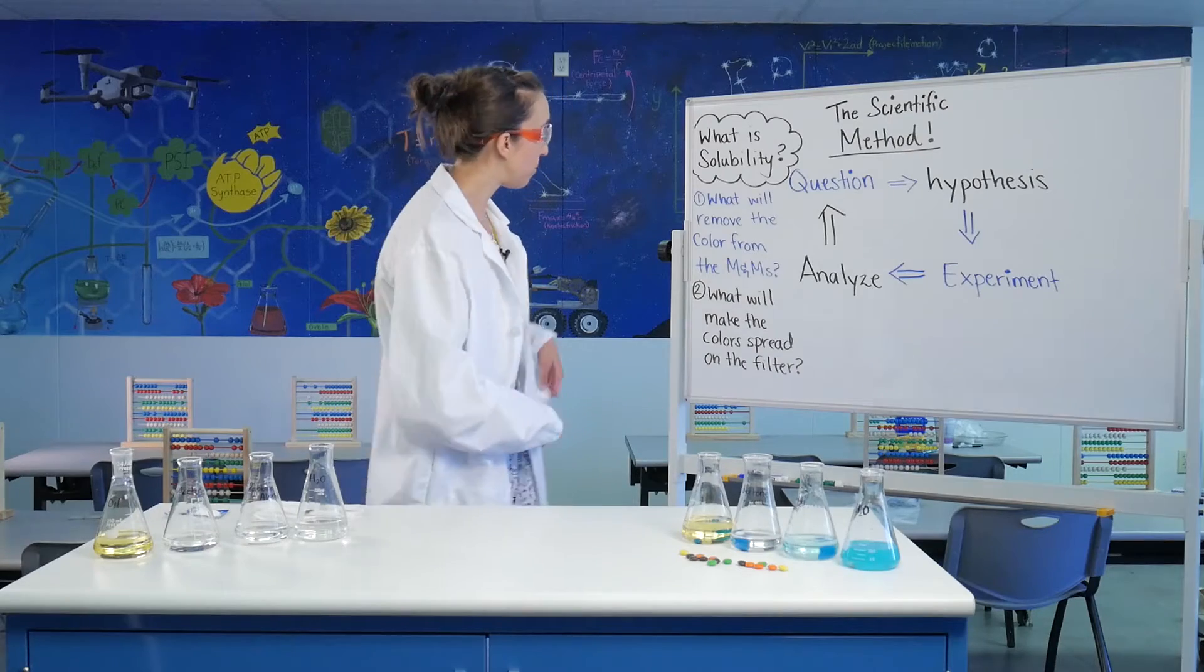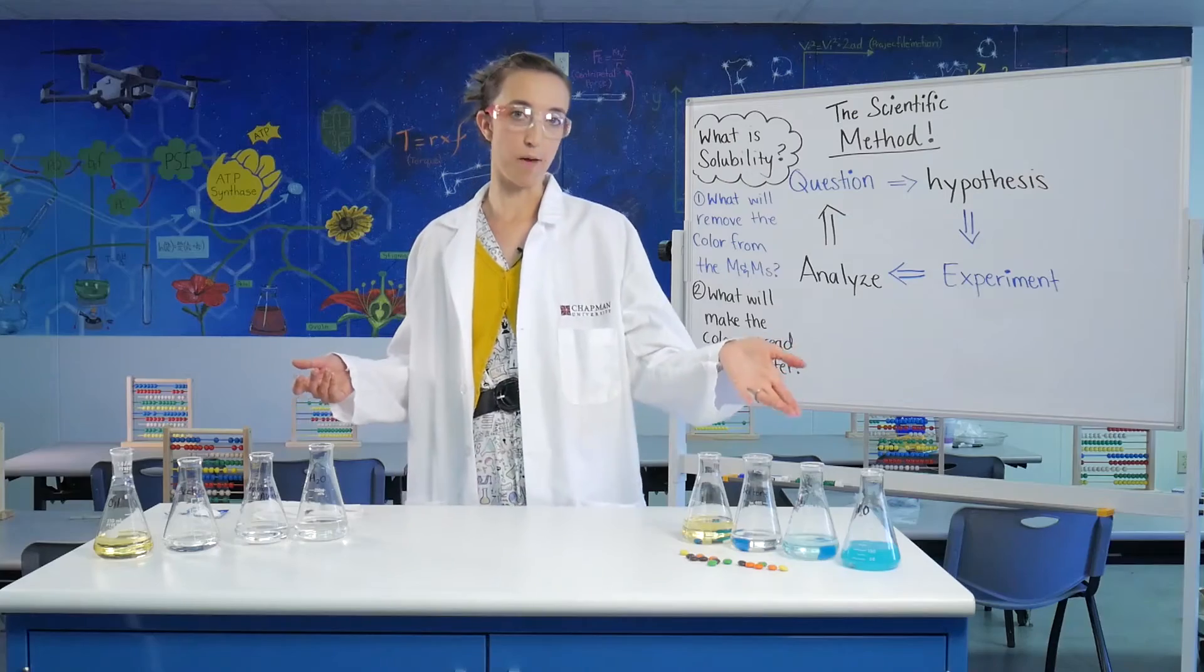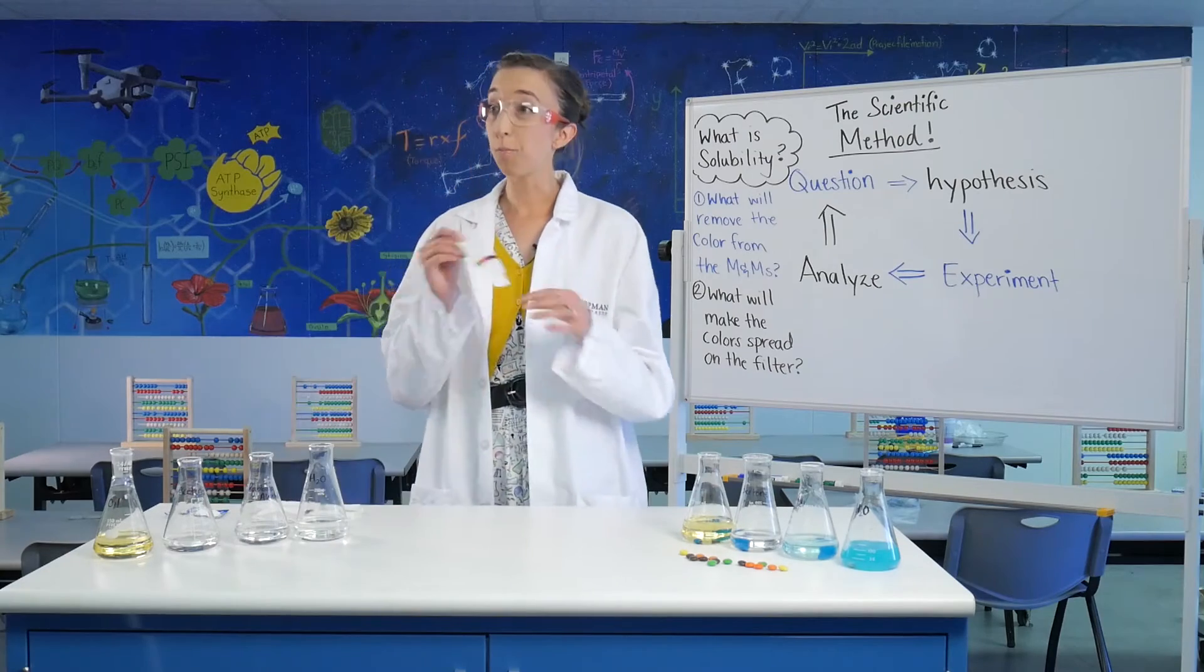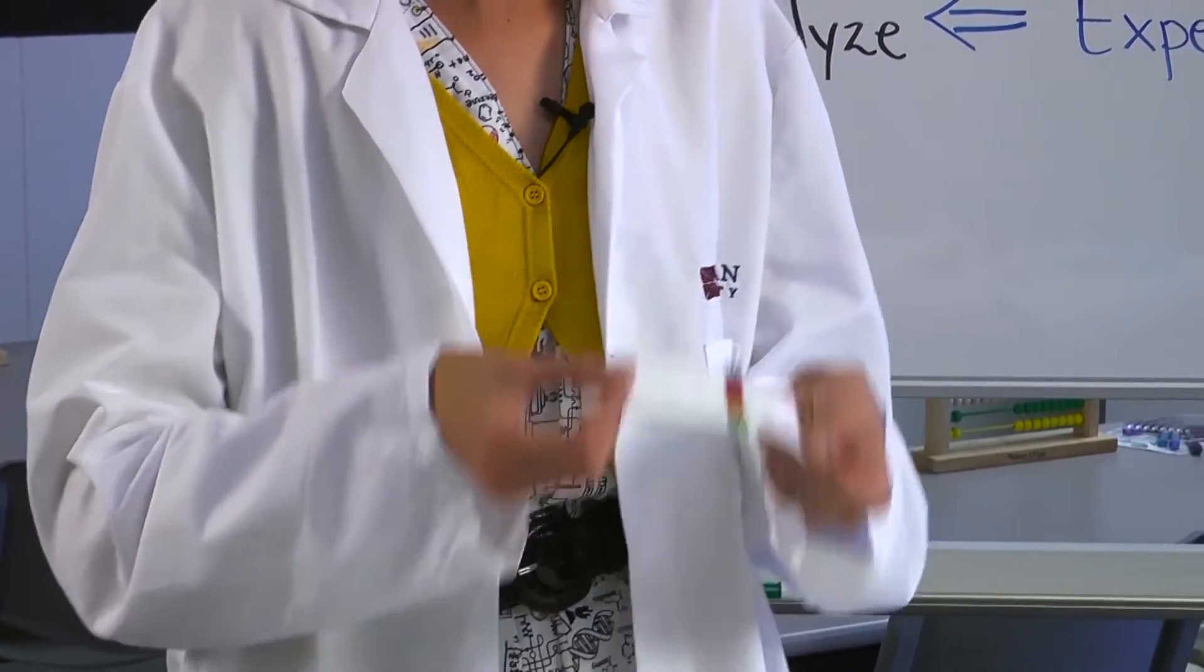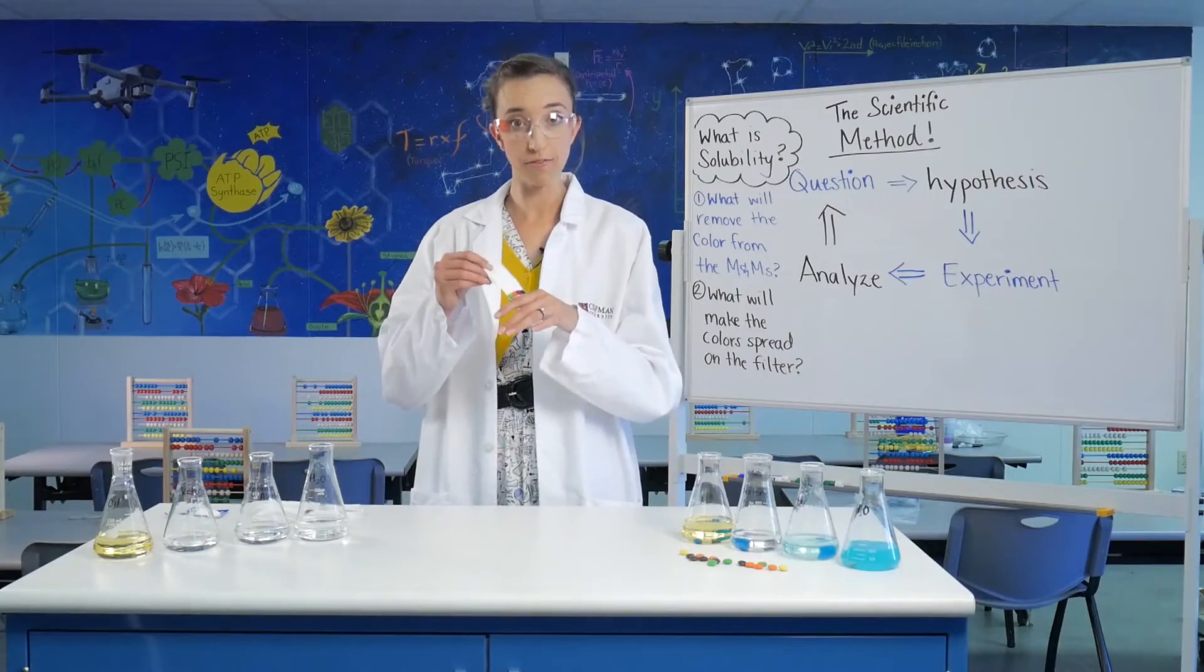For my next experiment, what I want to do is look at how colors spread from other sources. We talked about M&Ms, and that's delicious. We also know that Sharpies are permanent markers. But can I get any of these colors to spread or to be moved around on this filter paper?